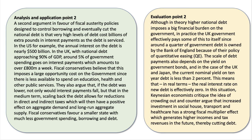That's my second point. Counter-argument — here's a nice evaluation phrase: although in theory higher debt imposes a big financial burden on the government, in practice the government effectively pays some of that debt back to itself. Around a quarter of the debt is owned by the Bank of England through quantitative easing, so some of that money comes back. The scale of interest payments also depends on the yield on government bonds, and at the moment in the case of the UK and Japan, the current nominal yield on 10-year debt is less than two percent.